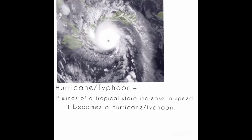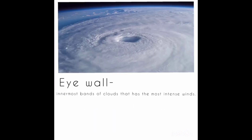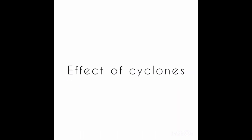Hurricane or typhoon: if the winds of a tropical storm increase in speed, it becomes a hurricane or typhoon. Features of a hurricane or typhoon include rain bands — clouds that spiral around the hurricane — and the eye wall, which is the innermost band of clouds containing the most intense winds.